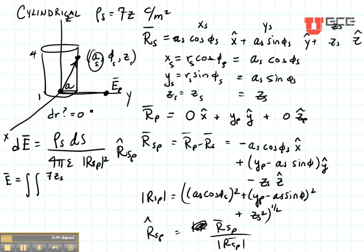How about phi and Z? Yes, phi is varying as I can see here and Z is varying as I can see. So DR is the only term that's not equal to 0.